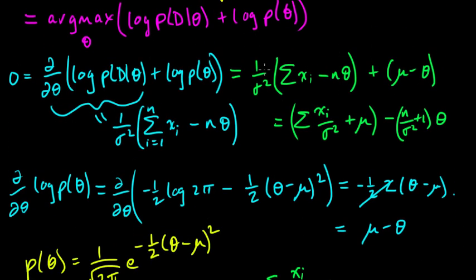To verify this is a maximum, we take a second derivative of the expression with respect to theta. Since the theta terms were linear in the first derivative, the second derivative is just the constant minus (n over sigma squared plus 1), which is always negative since sigma squared is always positive as a variance. So this critical point is indeed a maximum.